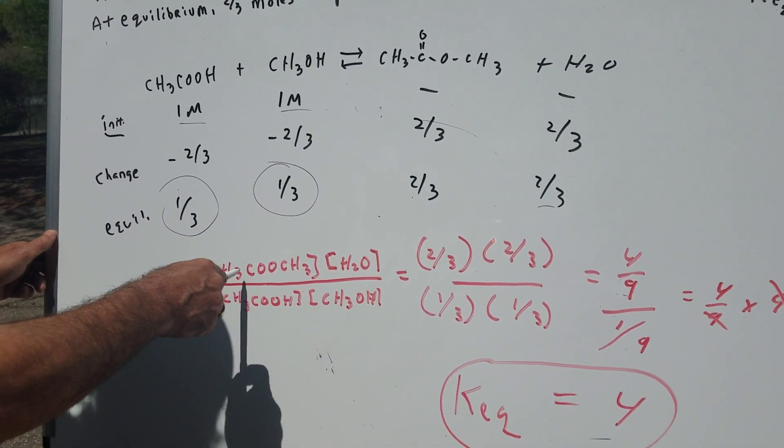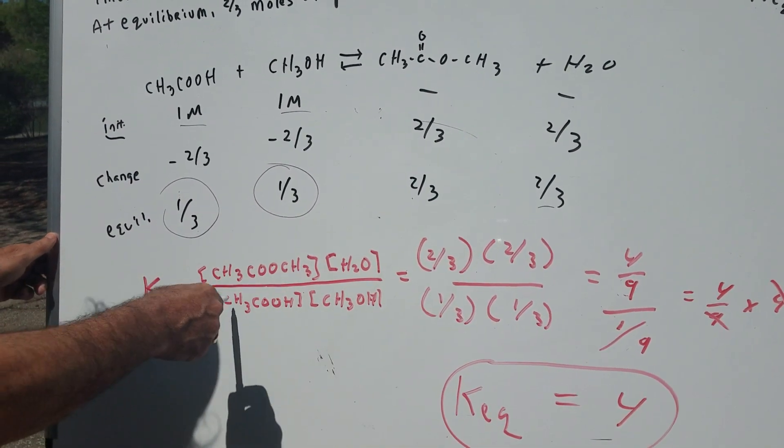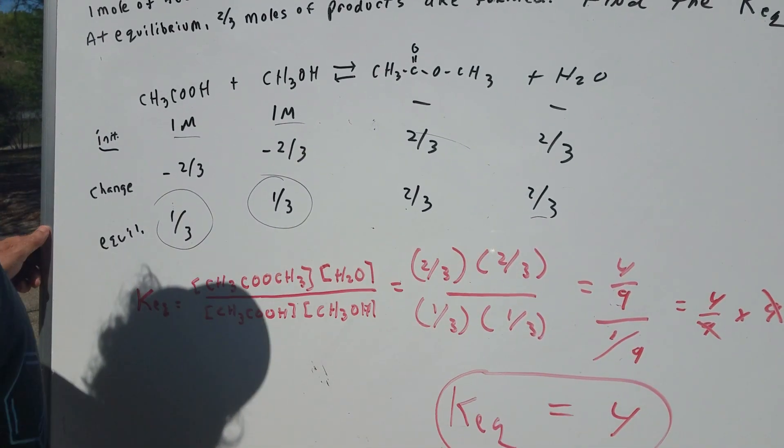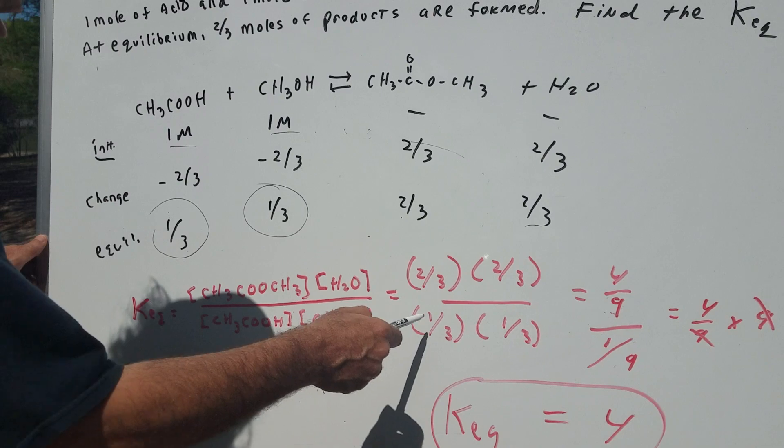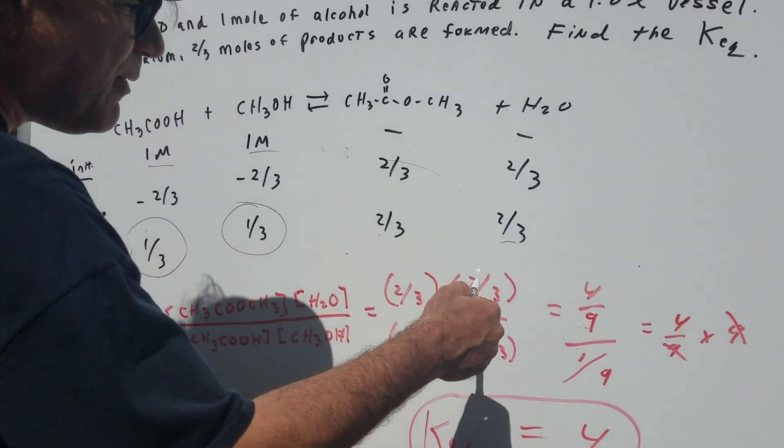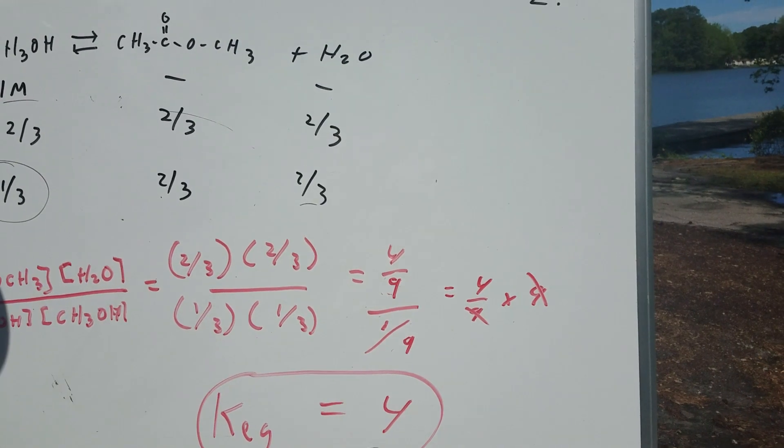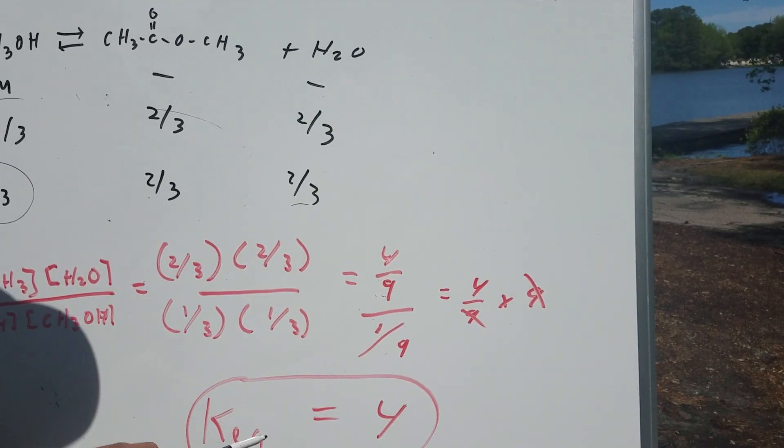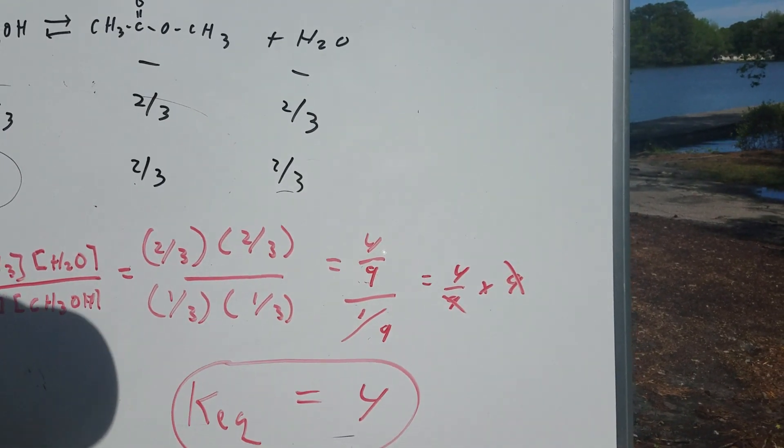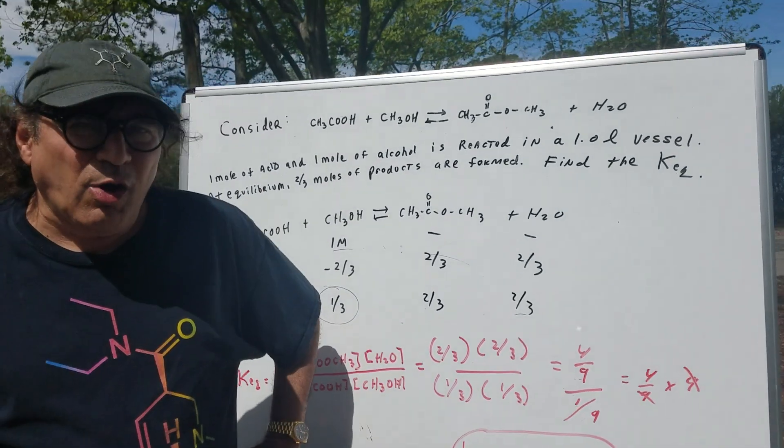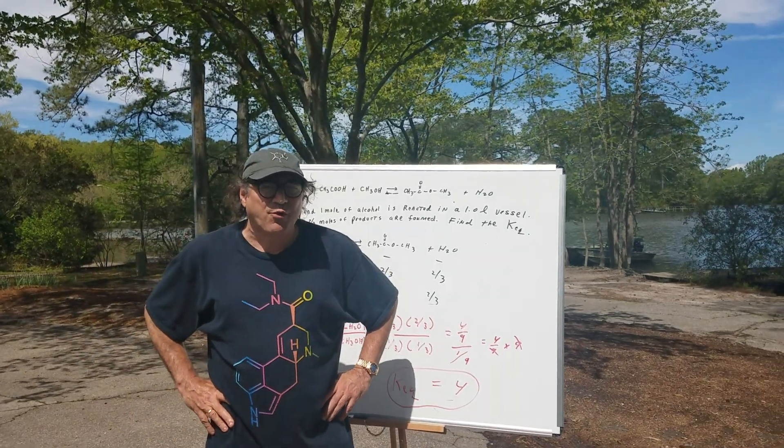So the KEQ would be ester times water divided by the acid times the alcohol. Plug it into numbers. Two-thirds times two-thirds. One-third, one-third on the bottom. That gives me four-ninths divided by one-ninth. Which is the same as four-ninths times nine. Crossing out the nines. And whoosh. You get four for the answer. KEQ is four.